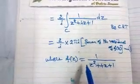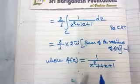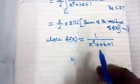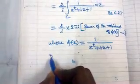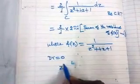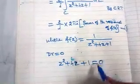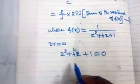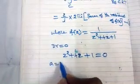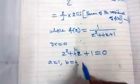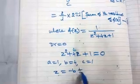To find the residues, we first find the poles of f(z) by setting the denominator equal to zero: z² + 4z + 1 = 0. This is a quadratic equation with a = 1, b = 4, c = 1.